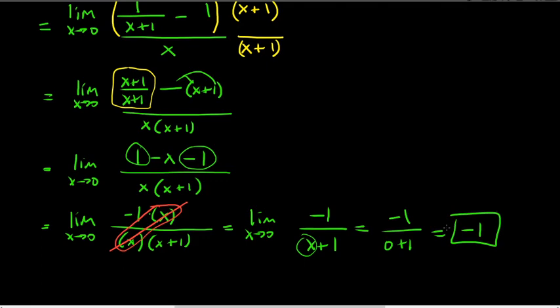Parts b and c are very similar — you just have to simplify, do a little algebra, and hopefully cancel whatever is in the denominator that's giving you zero. That's the idea for limits.